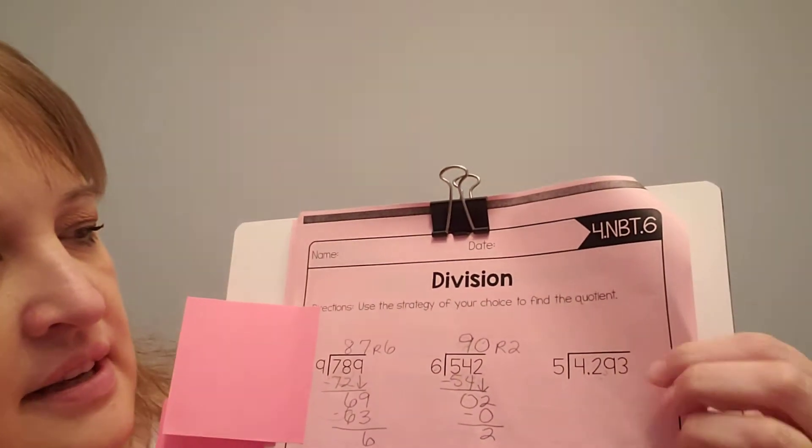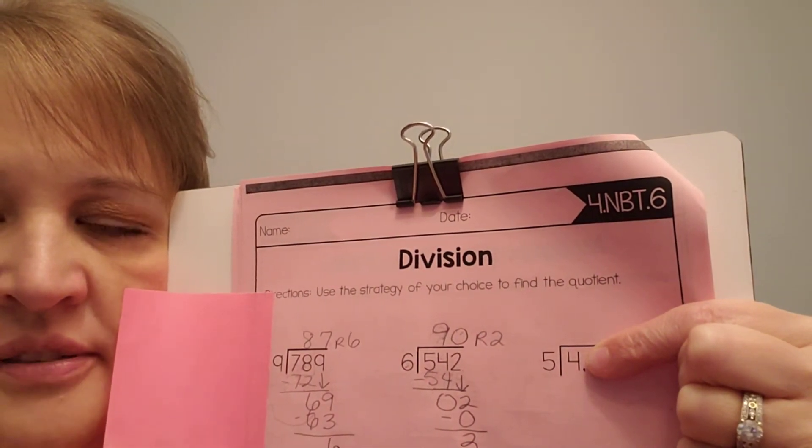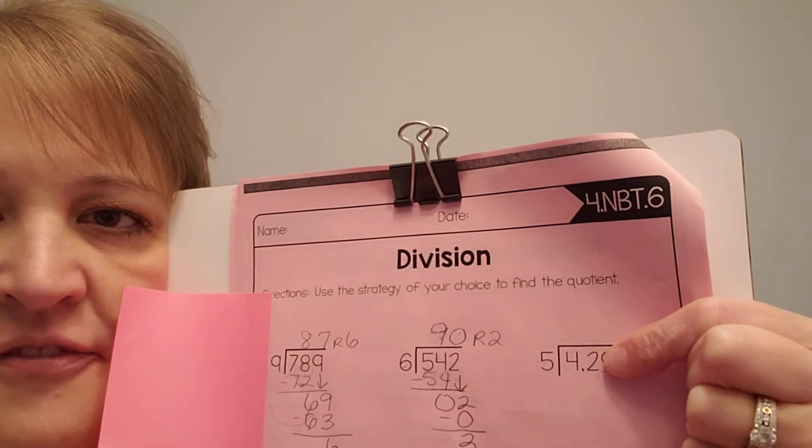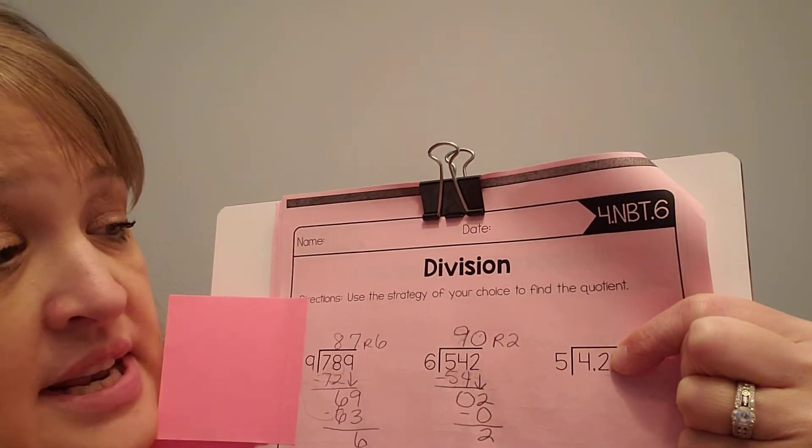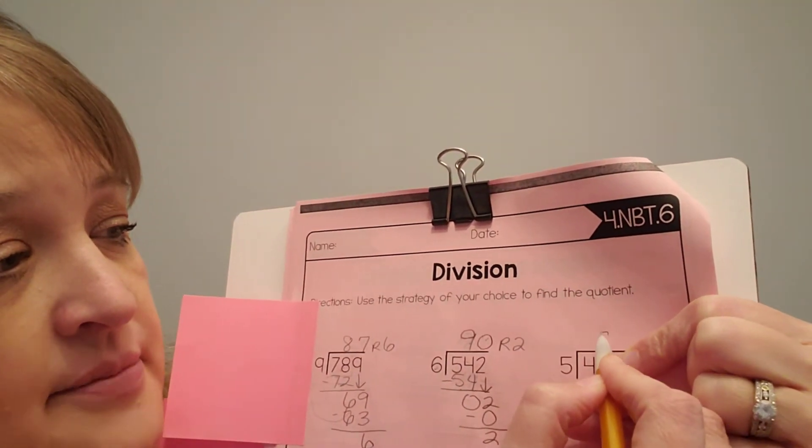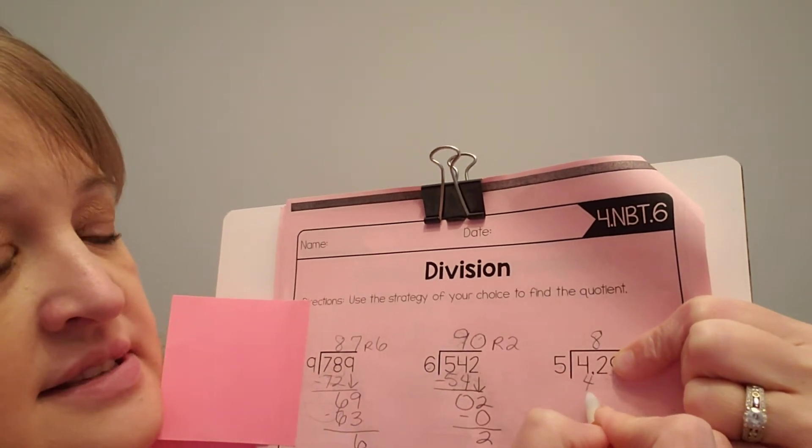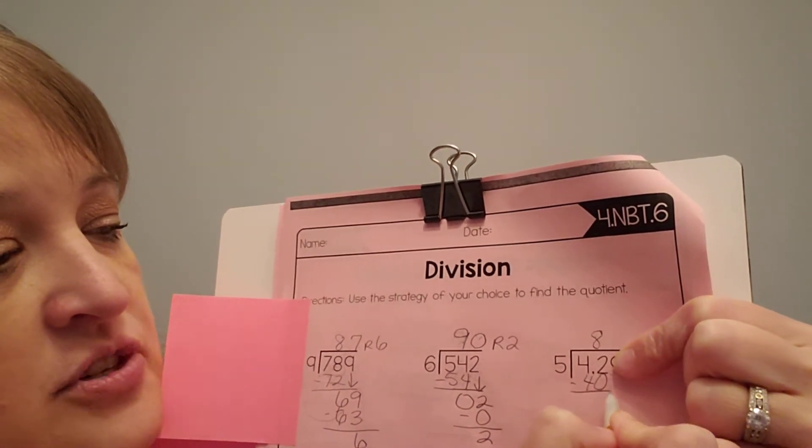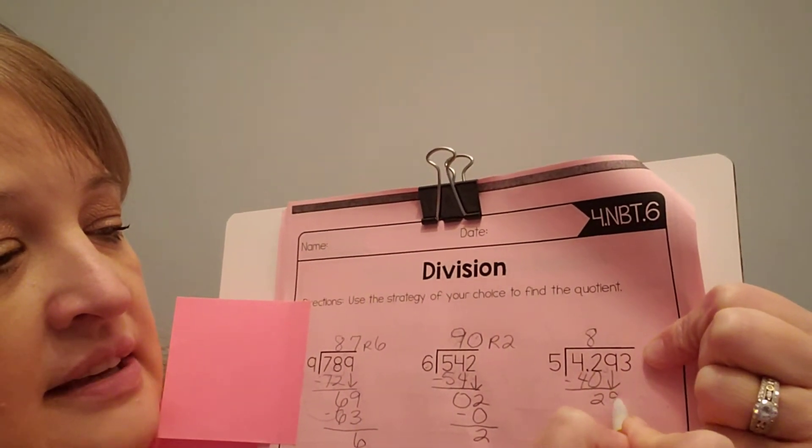All right. All right. Let's try the next one. Cover up all the numbers except for the first one. Can 5 fit into 4? No. Can 5 fit into 42? Yes. So 5 times 8 is 40. That's close. So I'm going to put an 8 here. 5 times 8 is 40. Subtract and get 2.